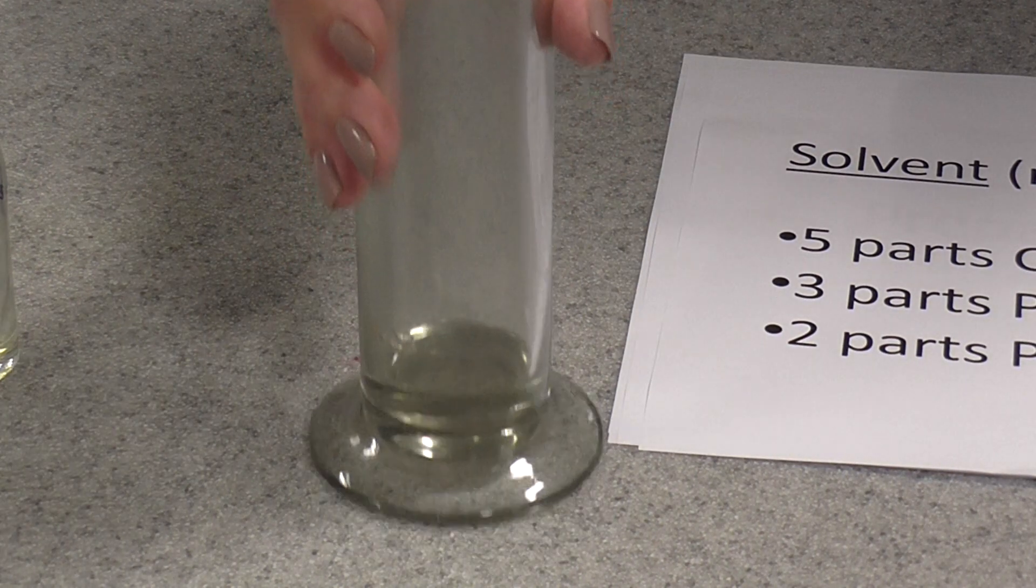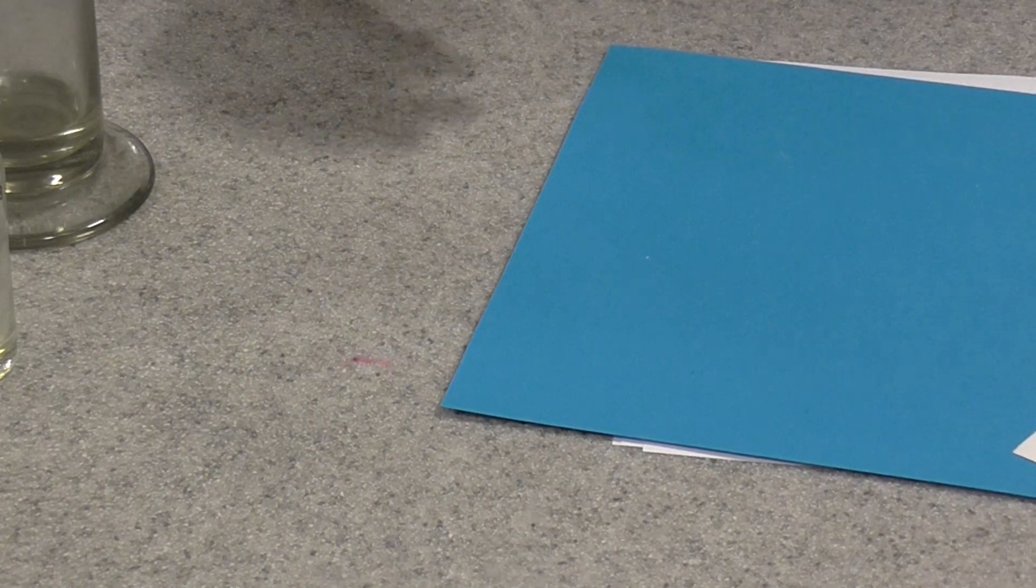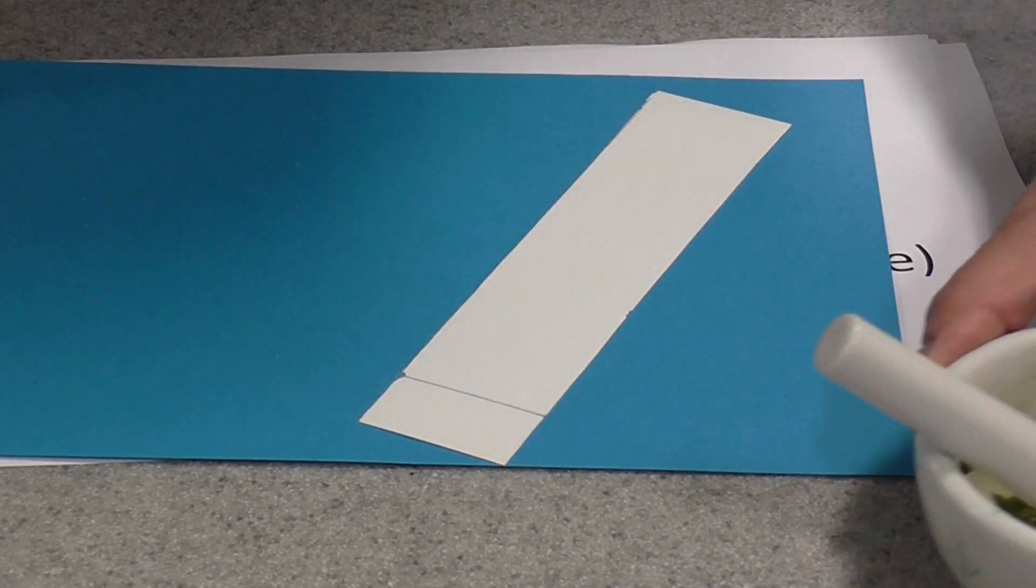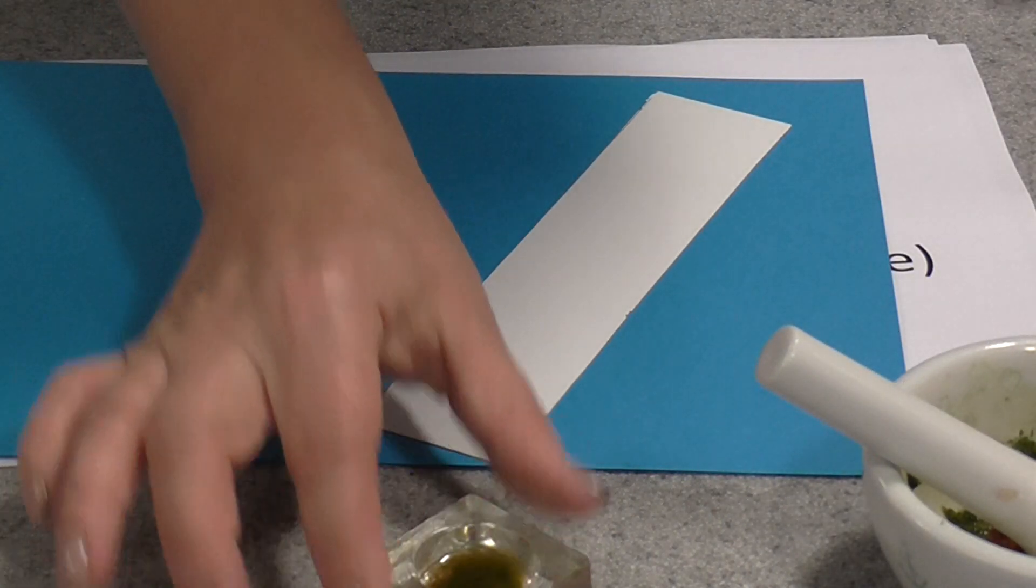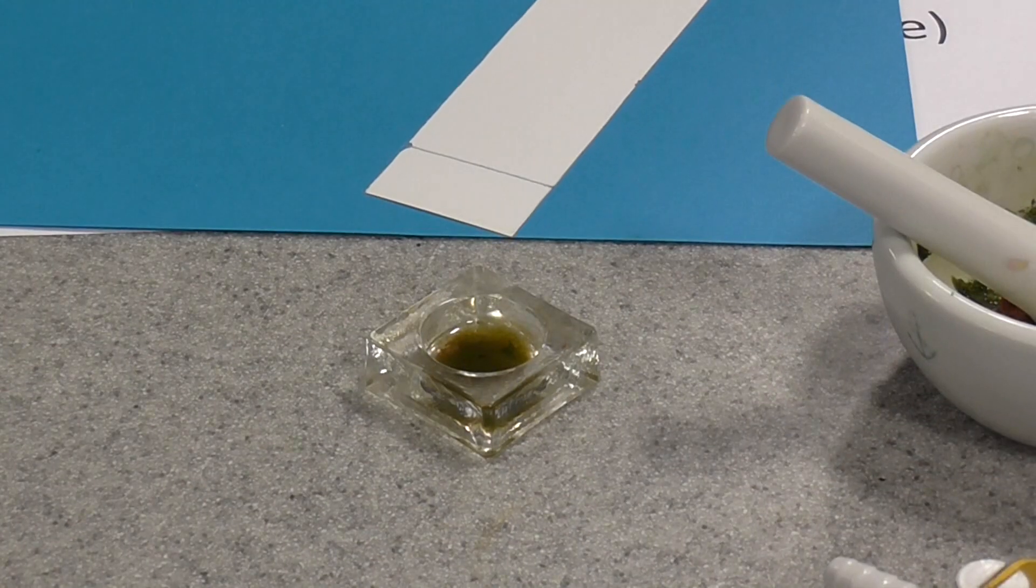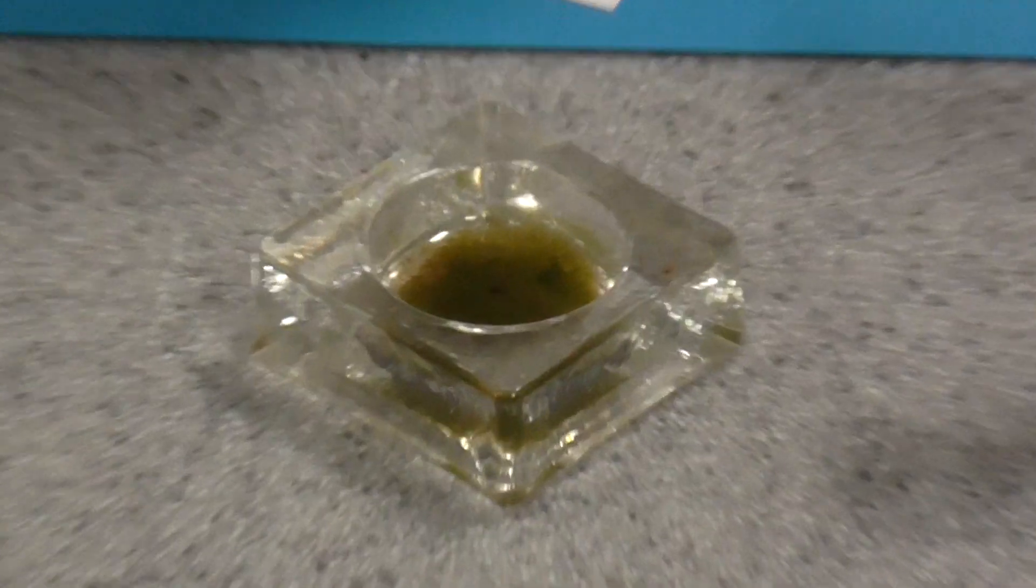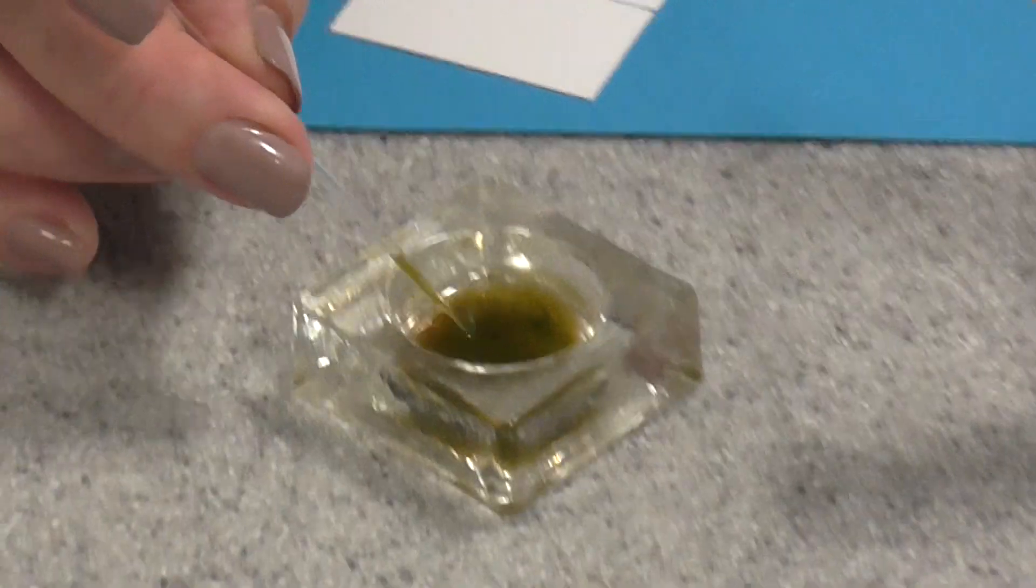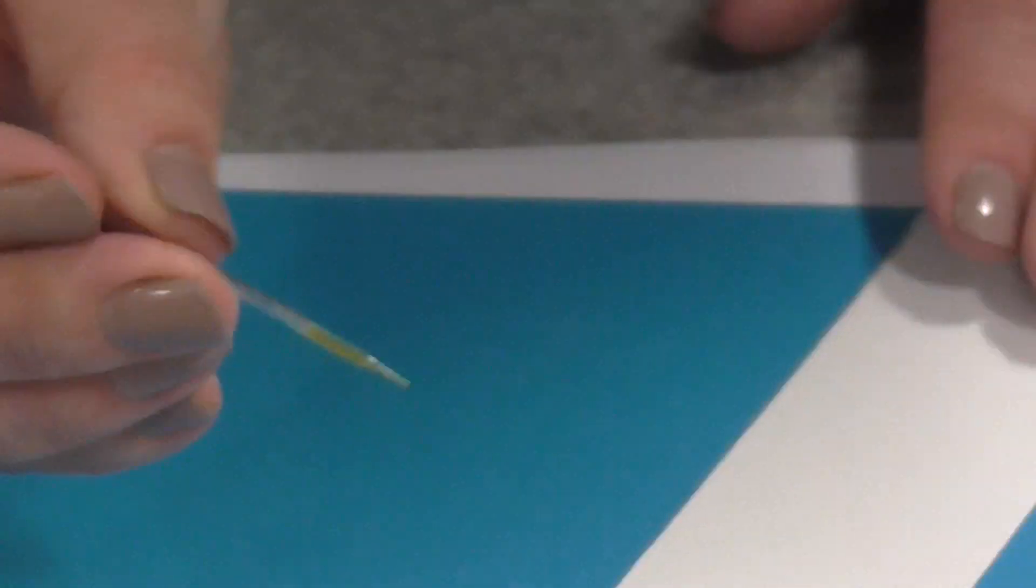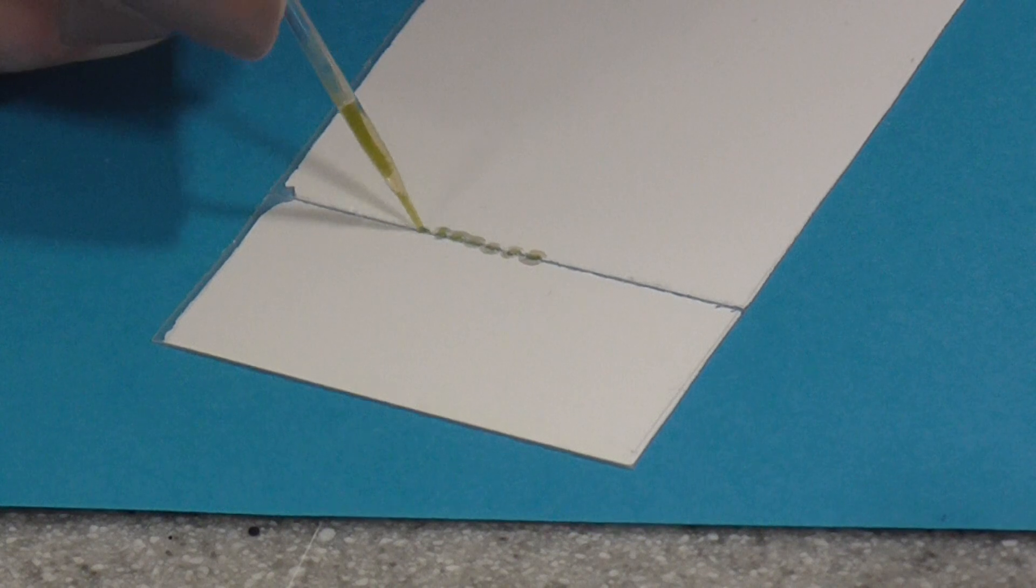Now to go back to the chromatogram, the next thing we need to do is load this with some of our plant pigment. I've got some plant pigment poured into a little watch glass, but you can just do it out of the mortar if you like. What we've got here is a capillary tube that's been heated and pulled out to form a much finer tube. If you dip that into your extract, you'll draw a little bit of the extract into there. Then you need to carefully load it onto the origin line that you've drawn on your paper.